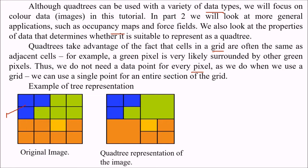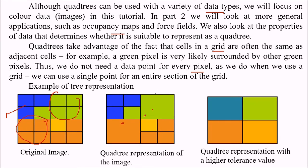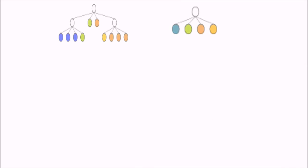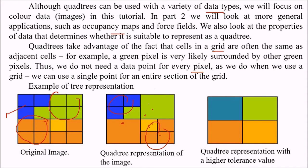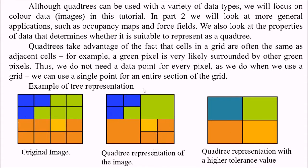This is your original image. In the quad tree representation, equivalent regions can be combined. With a higher tolerance value, even more regions can be combined. The actual tree representation shows the node with four partitions. Some partitions are already done, while others will again be divided into four. With higher tolerance, regions are combined so the tree will only have four partitions.